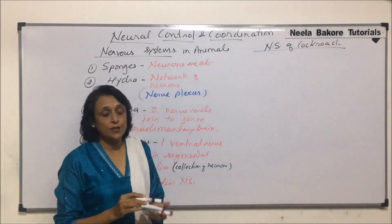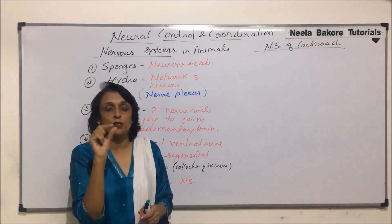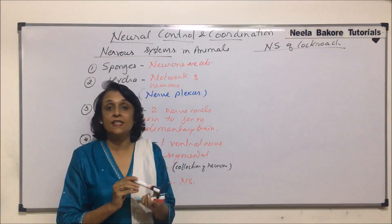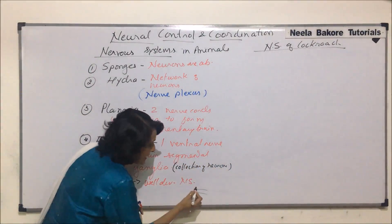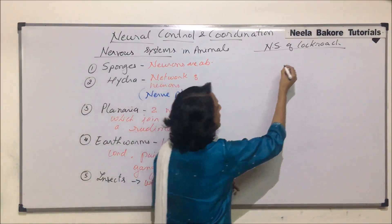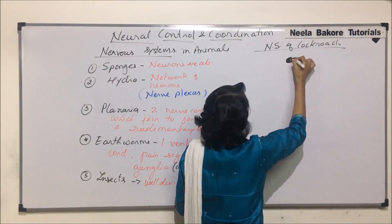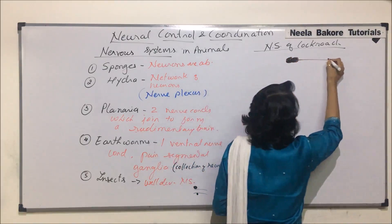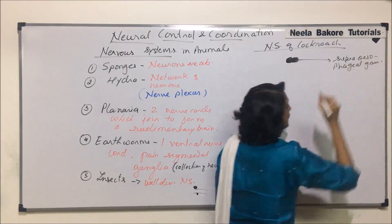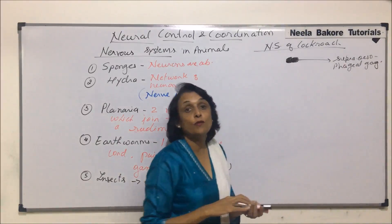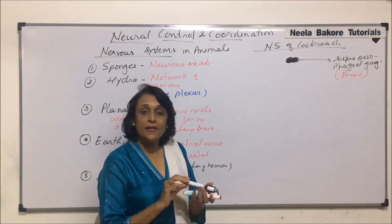In cockroaches, the body is divisible into head, thorax, and abdomen. There is a small tube-like structure known as the esophagus. Just above the esophagus there is a large ganglion — this upper ganglion is actually formed by the fusion of three ganglia, and it is called the brain in the case of cockroaches.